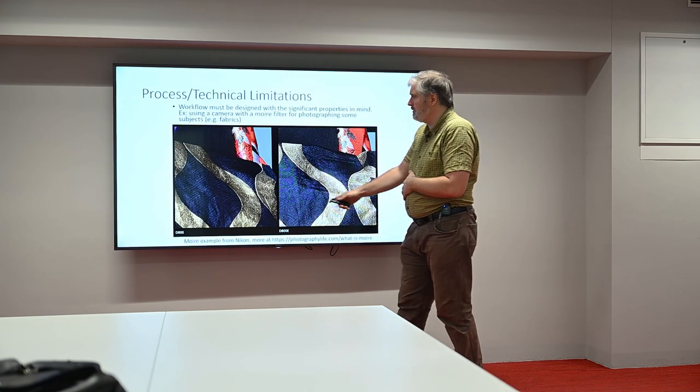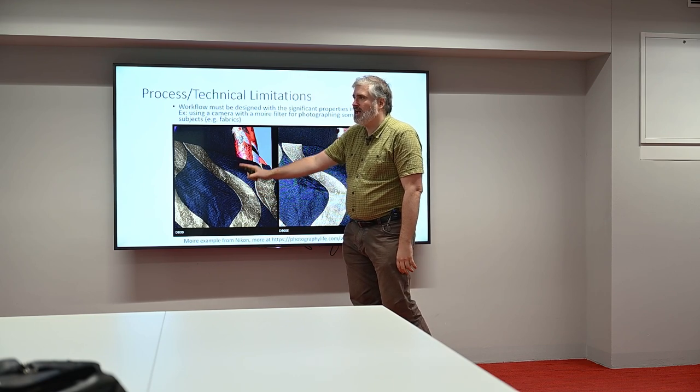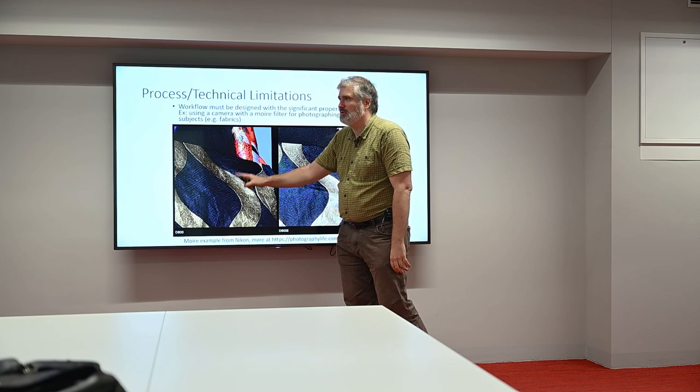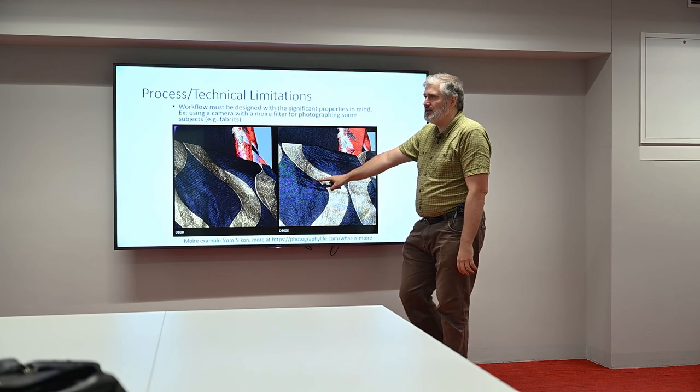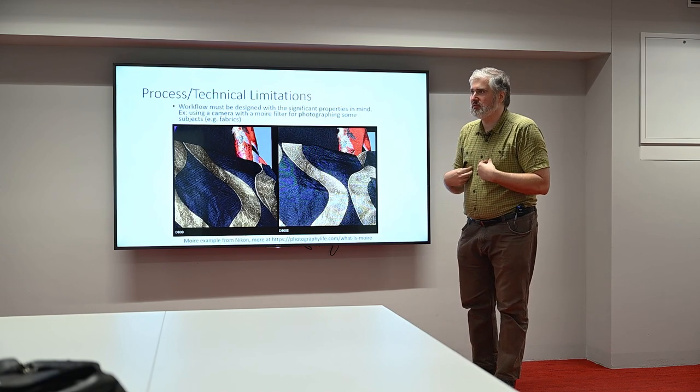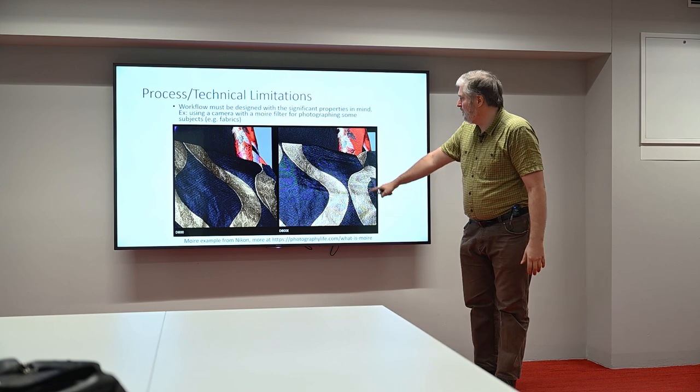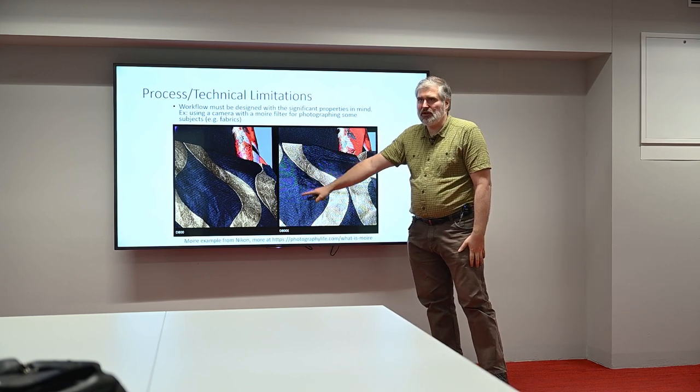Things like moiré filters. Moiré filters are on most cameras. They are actually actively bad most of the time. They are making your images worse. Until you have a finely textured fabric, or somebody wearing fine vertical pinstripes, in which case they make the image look right. Whereas before, you would get all this weird discoloration.